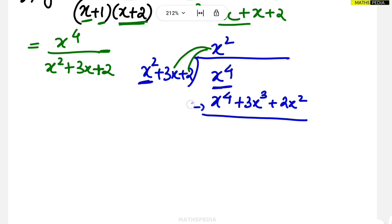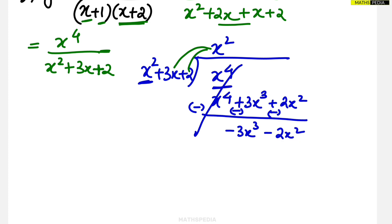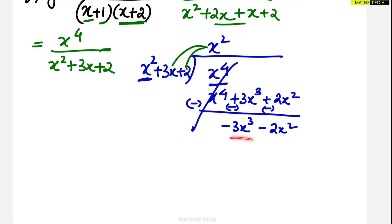Now subtract: x power 4 cancels, leaving minus 3x cubed minus 2x squared. We continue dividing until the remainder's power is less than x squared. The current power is x cubed, so we need to keep going. The first term is minus 3x cubed, and the divisor's first term is x squared, so we multiply by minus 3x to get minus 3x cubed.